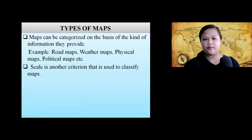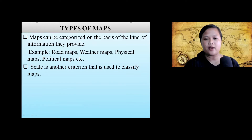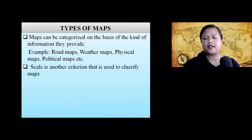Types of maps. Maps can be categorized on the basis of the kind of information they provide. For example, road maps, weather maps, physical maps, and political maps. They represent different kinds of information.